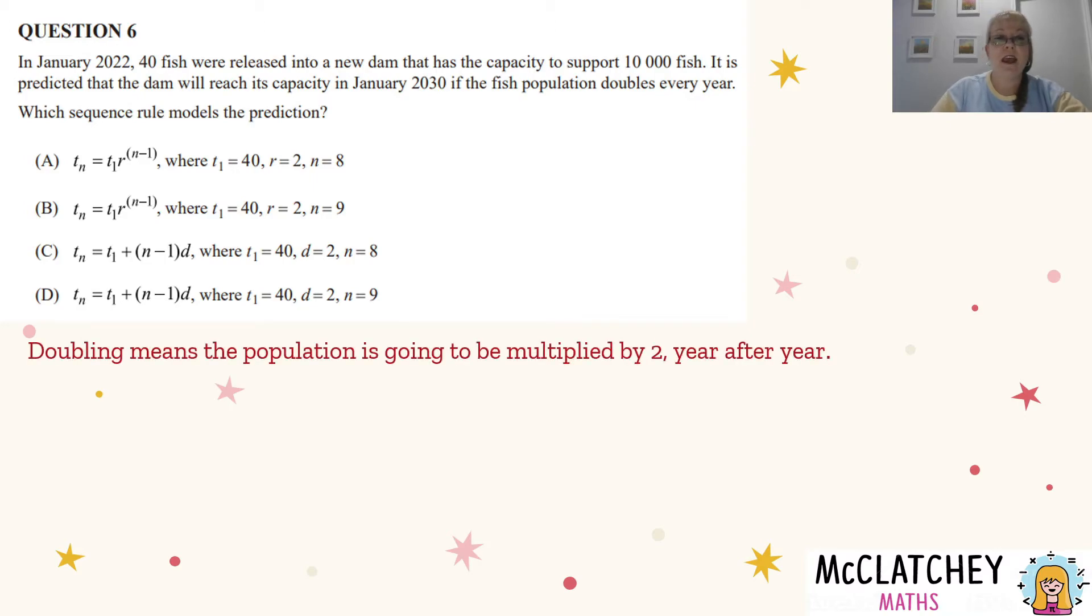So firstly, doubling means that the population is going to be multiplied by two year after year. It's a multiplicative process. So that means because it's multiplication, it's going to be geometric, because arithmetic is constant addition, not multiplication.